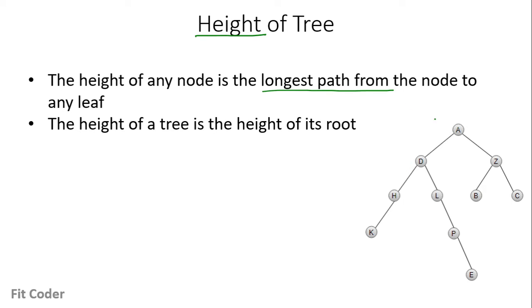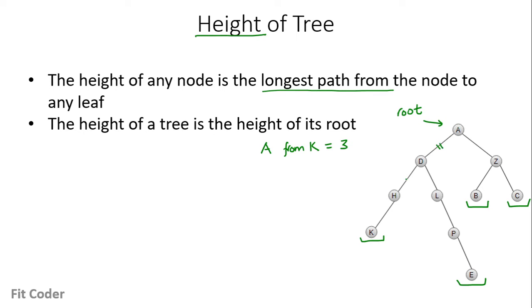In this example, A is the root node. The leaf nodes are K, E, B and C. The distance of A from K is 3 — there are 3 edges: AD, DH, and HK.